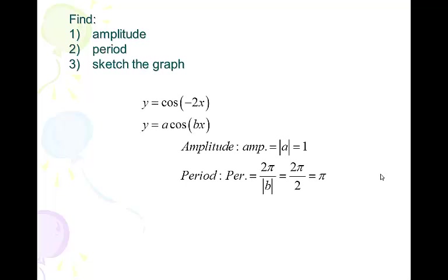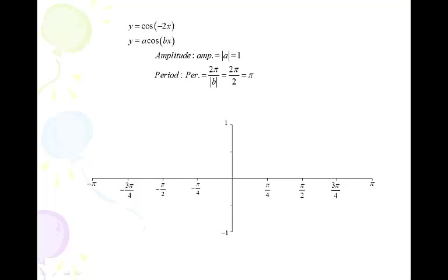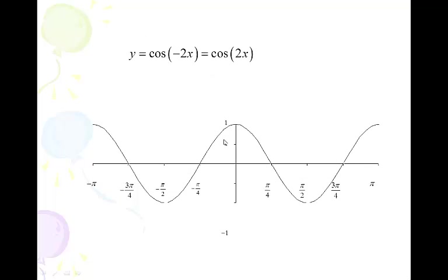Here's y = cos(-2x). Our amplitude is 1, and the period is 2π over the absolute value of negative 2, which gives 2π/2 = π. The negative on the inside flips it over the y-axis. But notice the graph looks exactly the same — that's because cosine of negative θ equals cosine θ. There is no difference between cos(-2x) and cos(2x): it's an even function, and even functions are symmetric to the y-axis. Normally we'd go down to the right, but with negative 2 inside we go down to the left — which actually makes no difference. It looks exactly the same. That was a bit of a trick question.